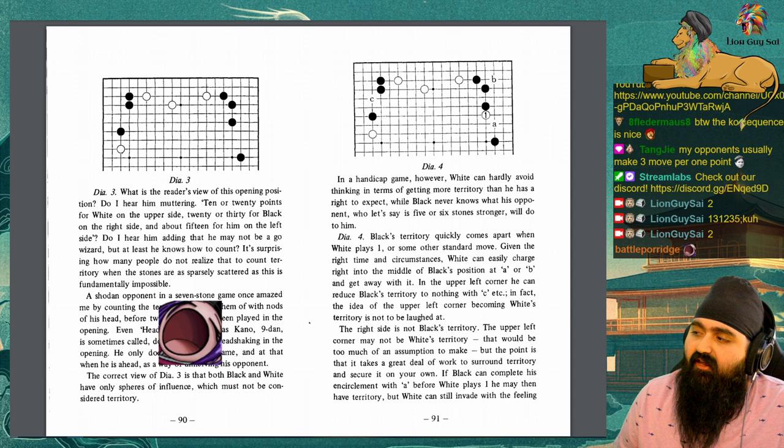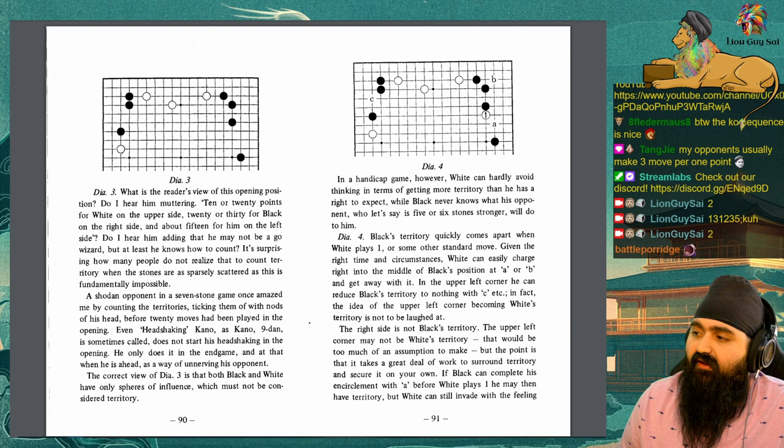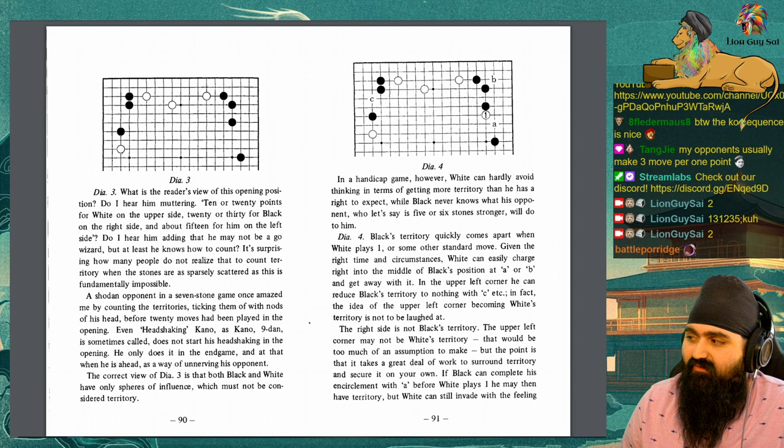In a handicapped game however, white can hardly avoid thinking in terms of getting more territory than he has a right to expect, while black never knows what his opponent, who's let's say 5 or 6 stone stronger, will do to him.